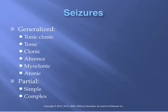To summarize: tonic-clonic begins with stiffening or rigidity of the muscles — that's the tonic phase — followed by loss of consciousness, then rhythmic jerking in the clonic phase. Absence seizures involve a brief loss of consciousness and awareness, with the patient staring into space and appearing to be daydreaming.